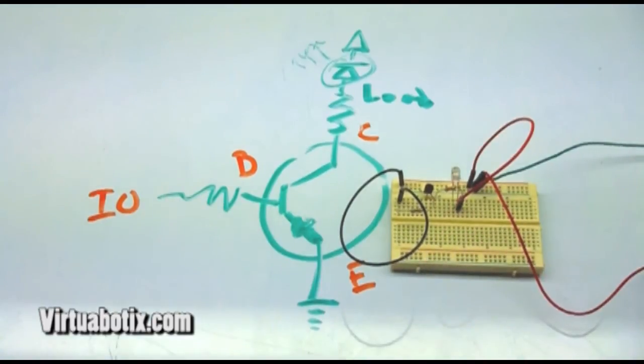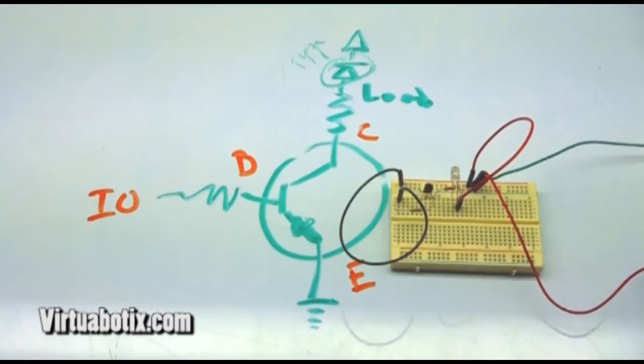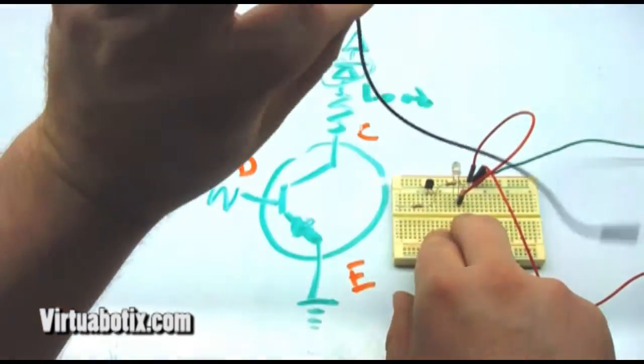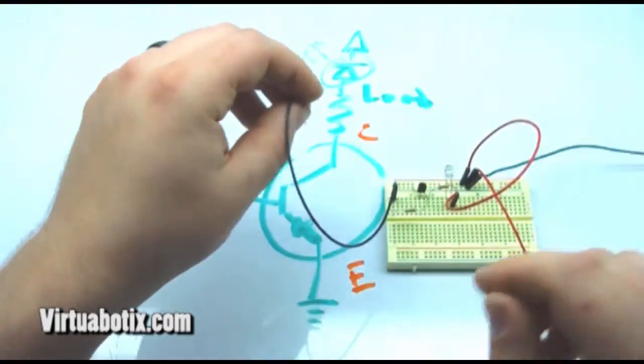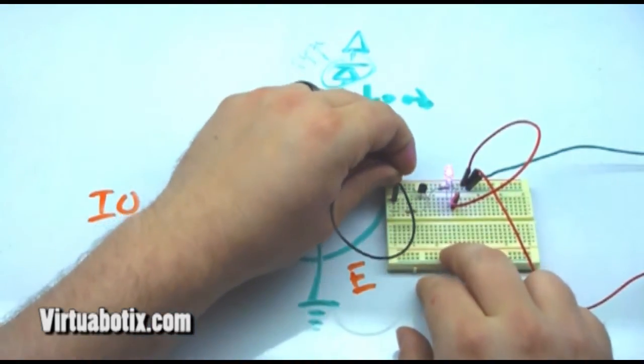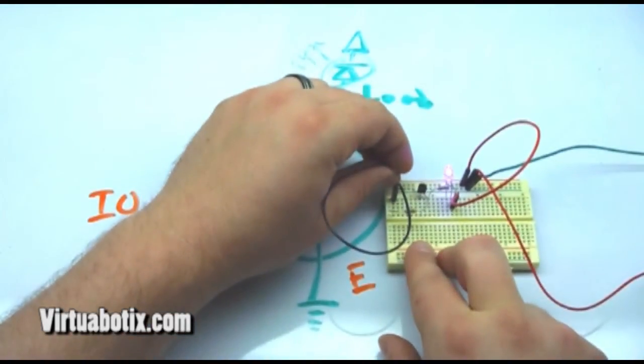So what I have is this connected up to a variable DC voltage supply. And so this DC voltage supply is currently set to about 5 volts. This is our control line here, to the base, set it up to the high, which turns the LED on.